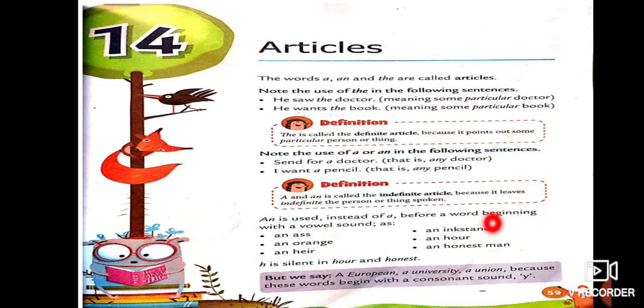Now, one more thing, students. Here, you can see, here, first letter is H. In R, H is first letter. And, here, also, honest. In honest, also, H. Both are first consonant letter. But, we are using N. Why? Because, if you will speak this word, R, H is silent here. Here, in honest, also, H is silent. So, here, vowel sound is there. That's why, we are using article N.